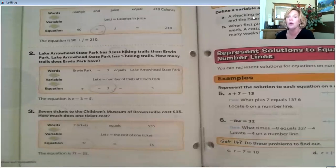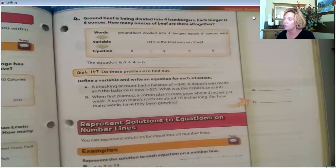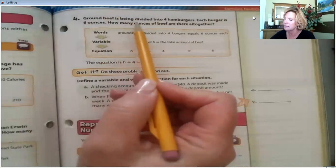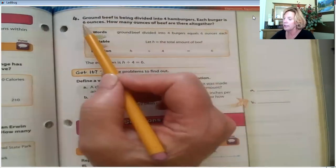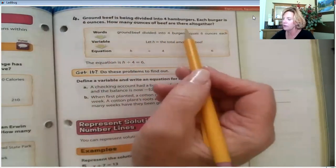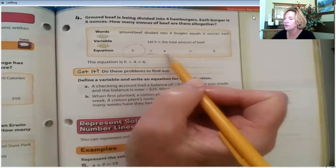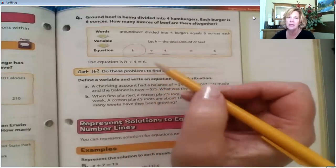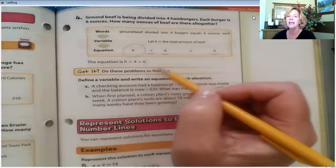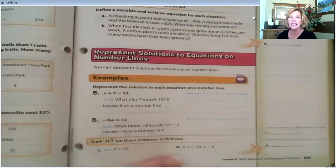Don't try to solve at this point. We're going for the equation. Okay. Let's look at one more. Ground beef is being divided into four hamburgers. Each burger is six ounces. How many ounces of beef are there altogether? So, we don't know how much we started with, but we do know we're dividing it into four equal groups and we end up with six ounces in each group. So, this, like the subtraction equation, really important to put them in their proper order.